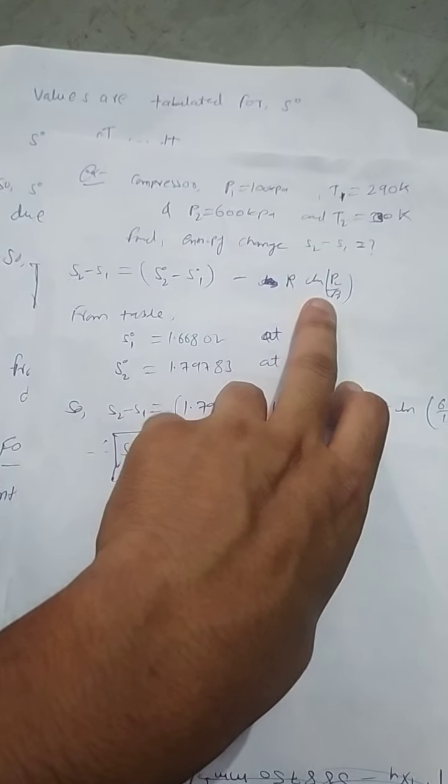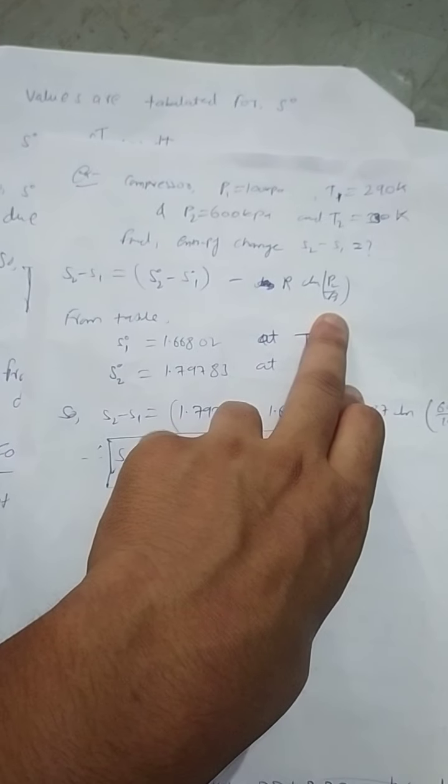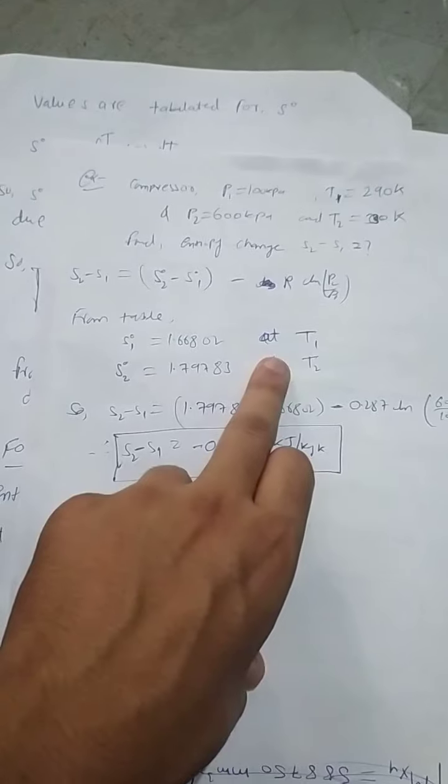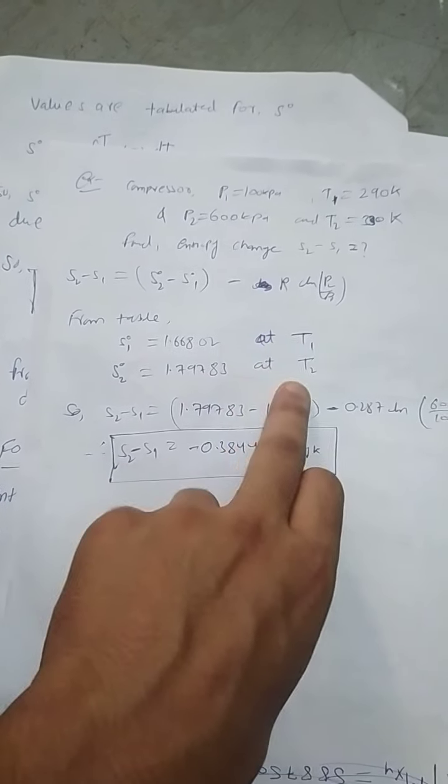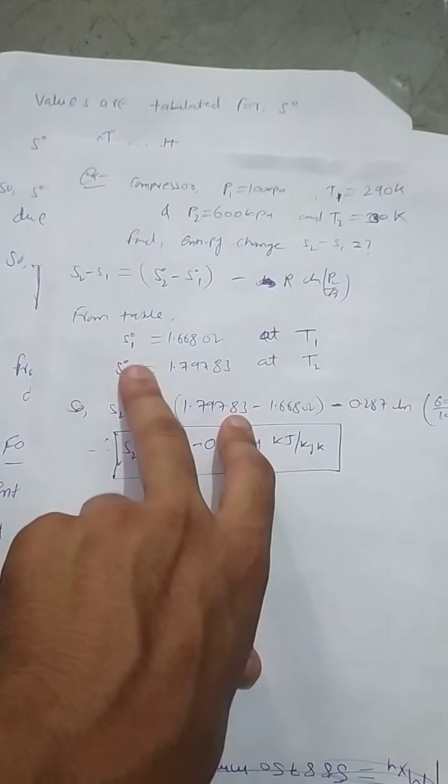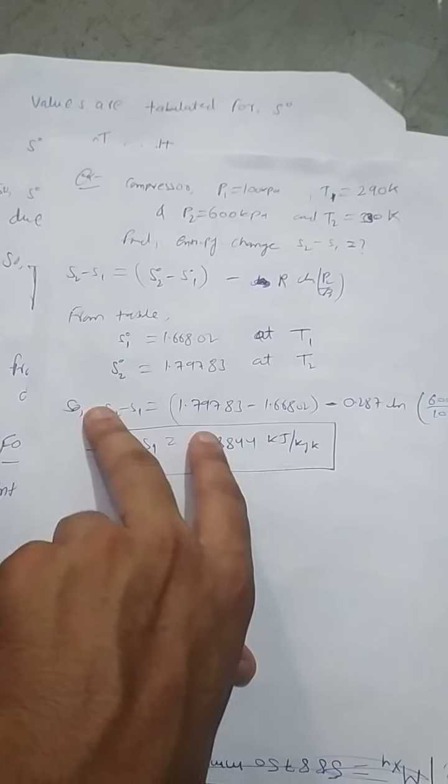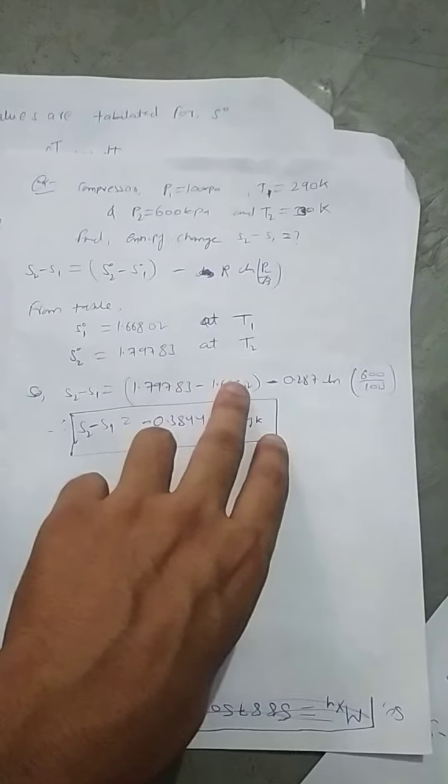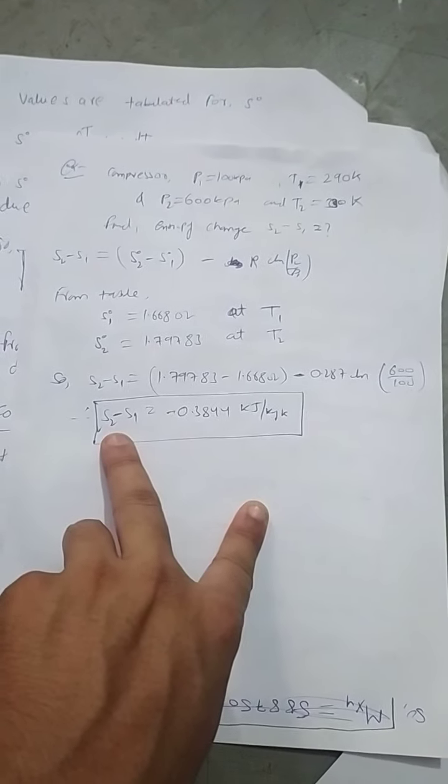And this is R ln(p2/p1). From the given temperatures T1 and T2, these values can be seen in the table and just dropped into the equation to evaluate the entropy change.